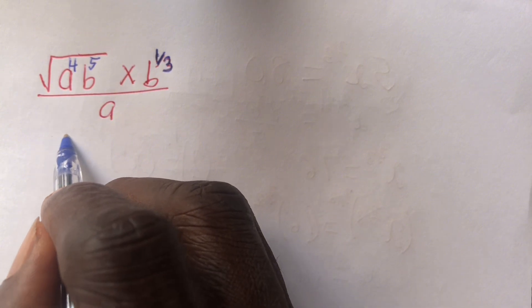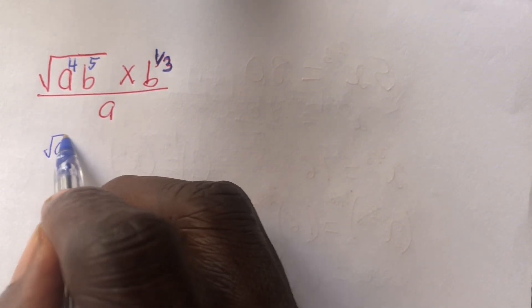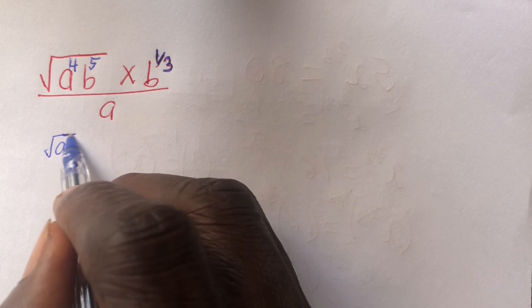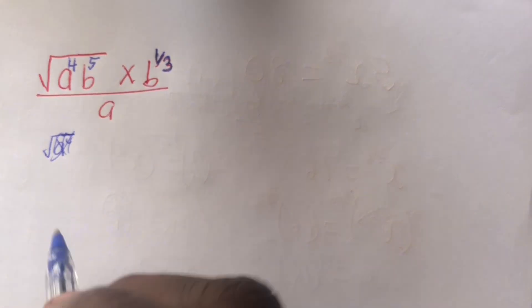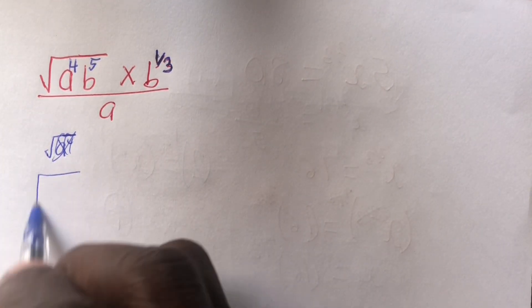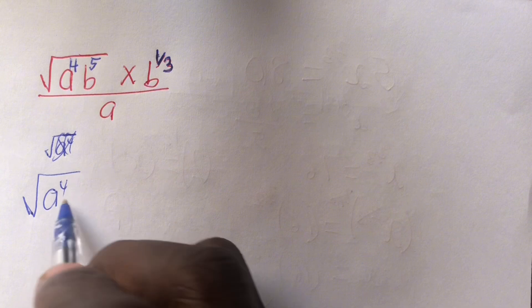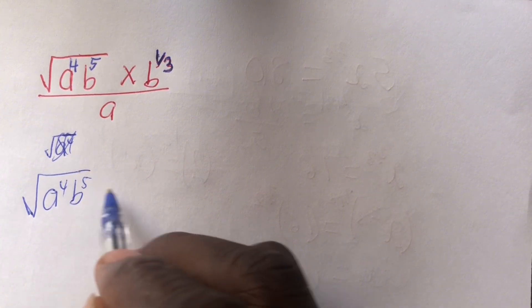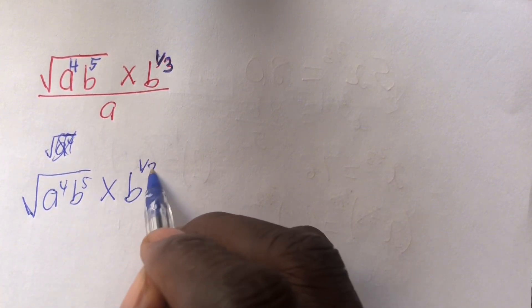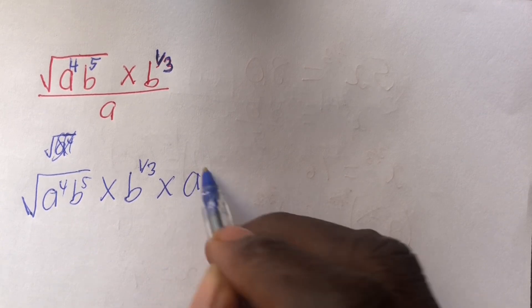We have square root of a power 4, b power 5. Let me do it big. We have a square root of a power 4, b power 5, times b to the 1/3, times a power negative 1.